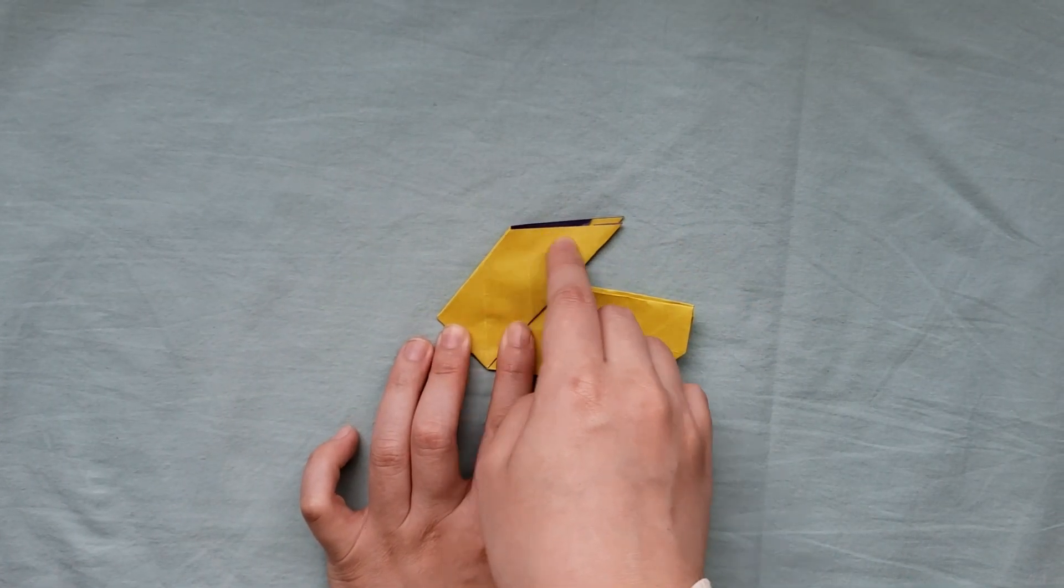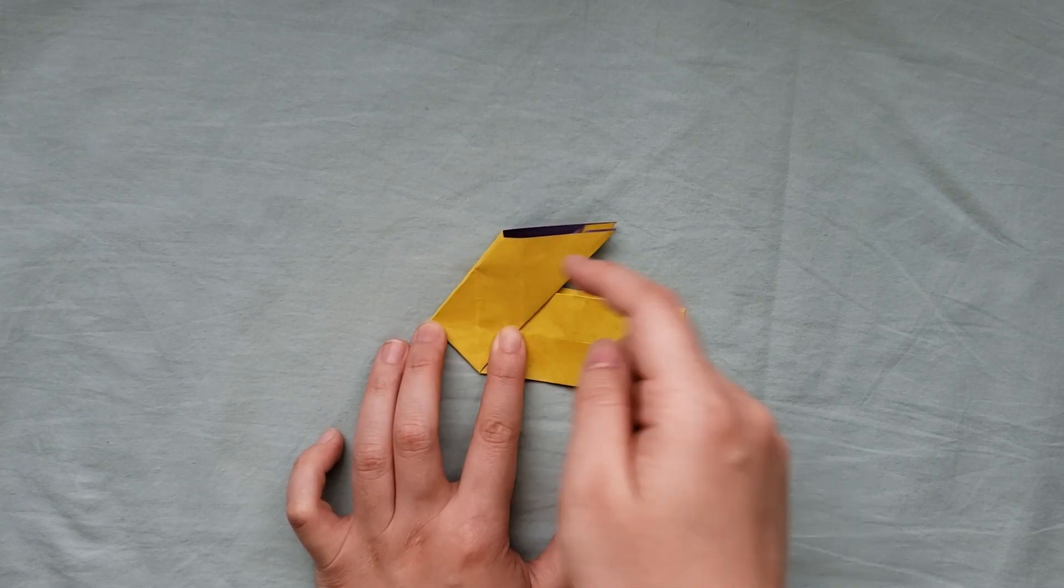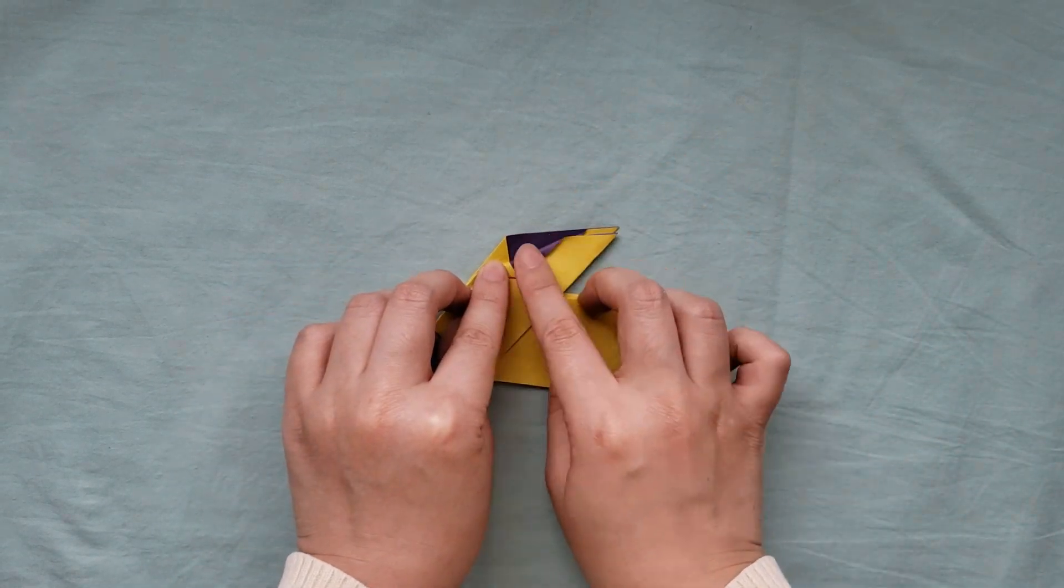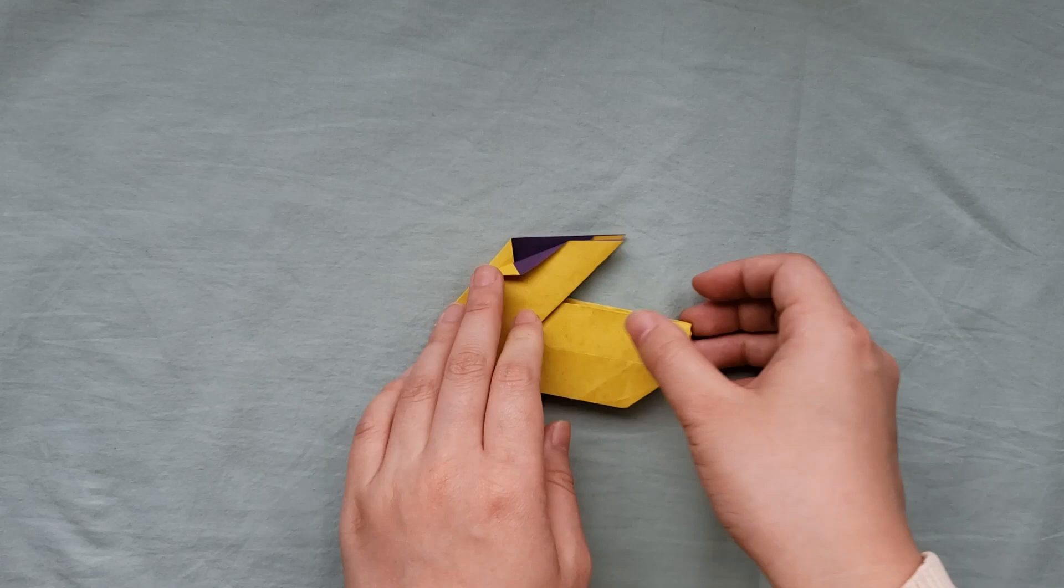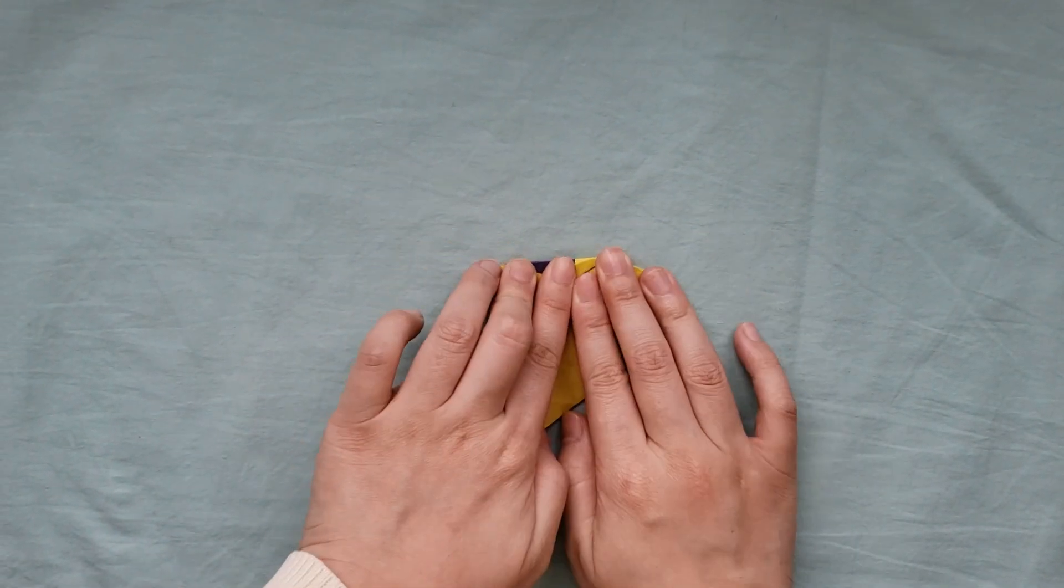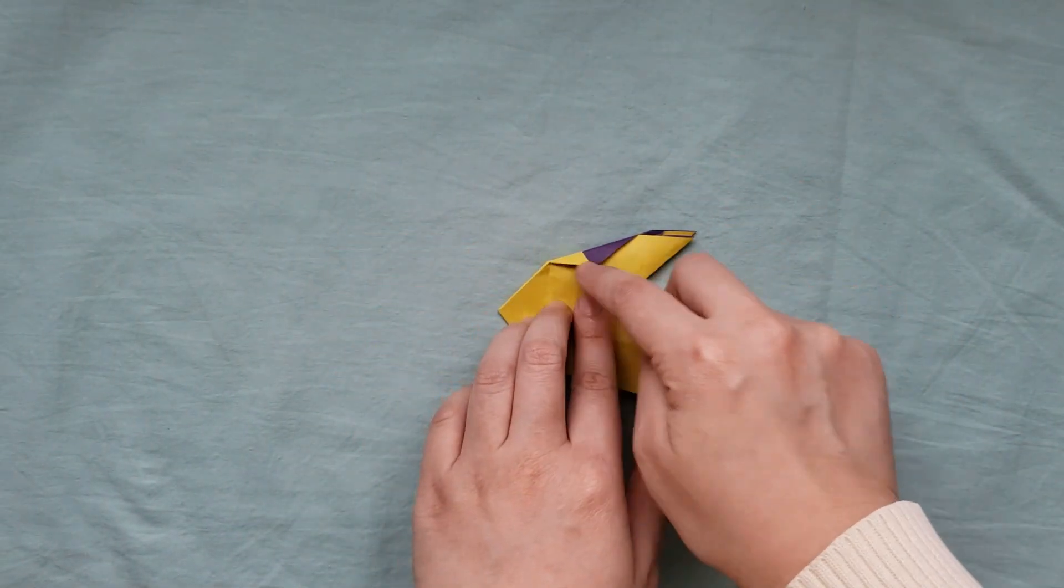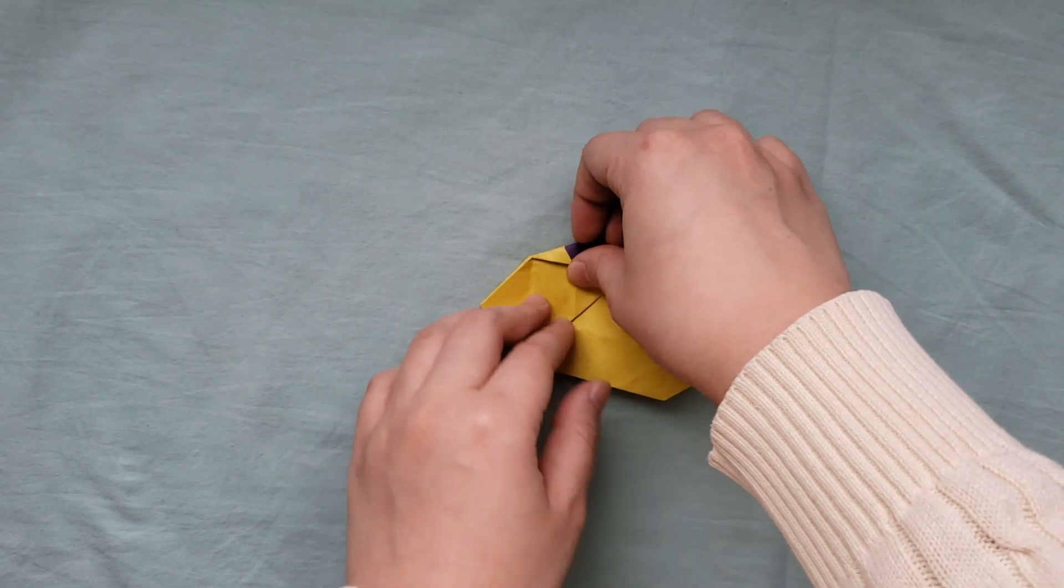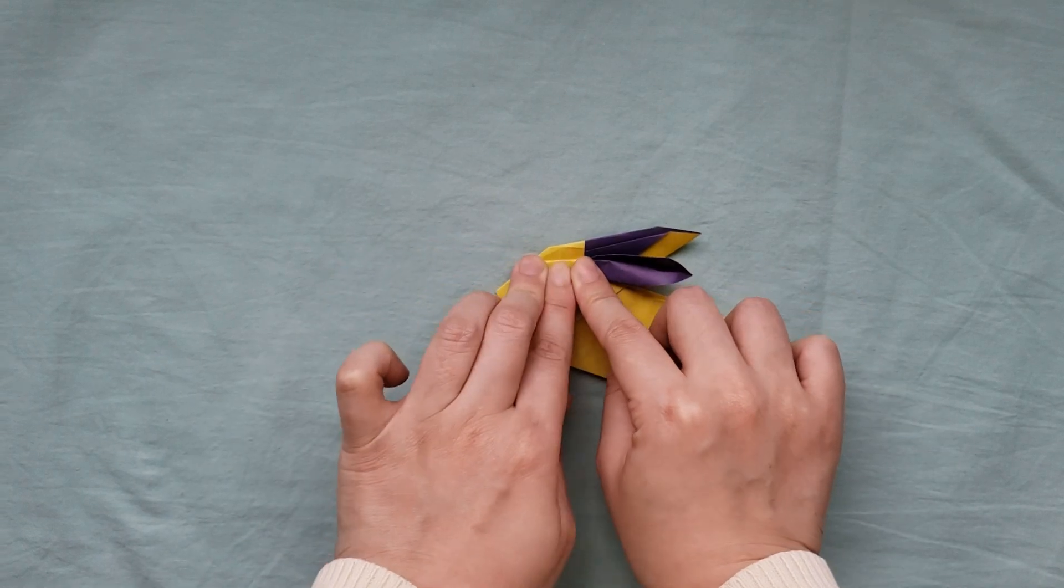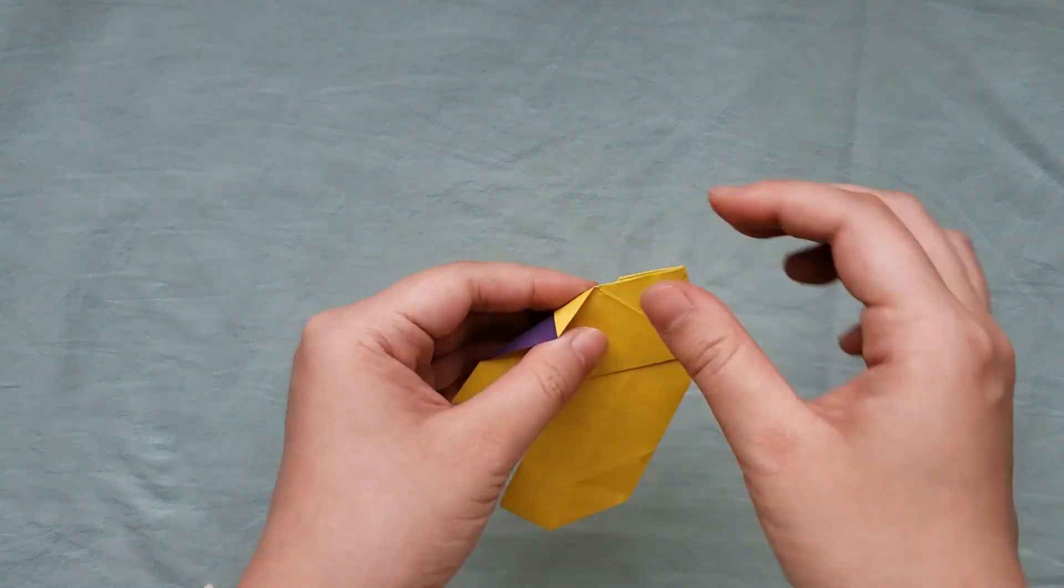Now make a fold from about halfway across the top edge to halfway down the diagonal edge. Do the same on the other side. Now fold again in about the same direction. You can also fold a little more horizontally to make the ears pop out more. Do the same on the other side.